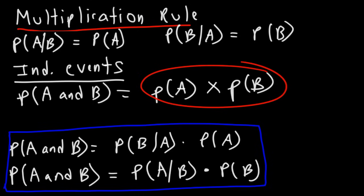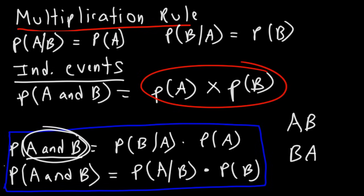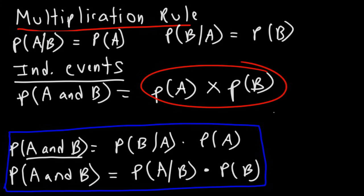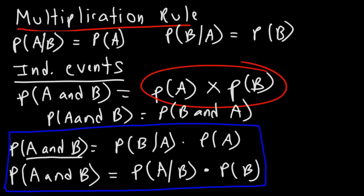One thing to mention: when you see A and B occurring, this means these two events are occurring at the same time. It doesn't mean A and then B, which could be different from B and then A. Because the events occur at the same time, the order is not relevant — otherwise the formulas may be affected. Therefore, the probability of A and B occurring is the same as the probability of B and A occurring.